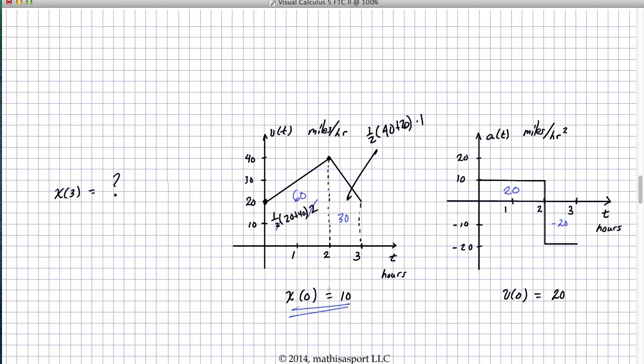I know I harp on that, but why do I do that? Because students, time and time again, in the heat of battle, forget to add in the initial position. And so, finally, and this is hopefully the answer that you got, we get x of 3 is 100. Namely, it was the initial position plus the two signed areas.